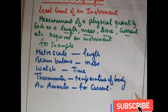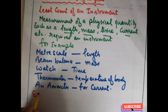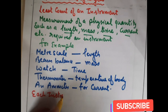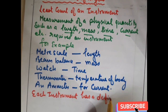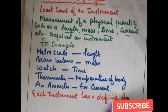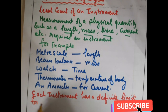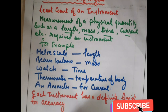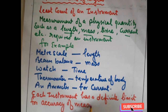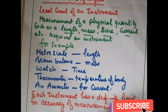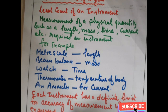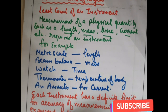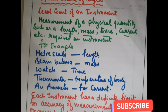All these instruments measure up to a definite limit. Each instrument has a definite limit for accuracy of measurement, which is expressed in terms of its least count.